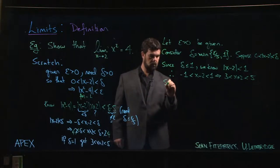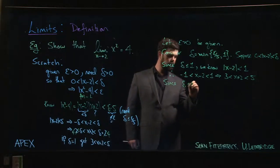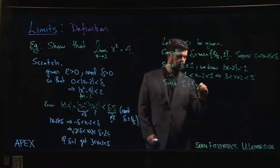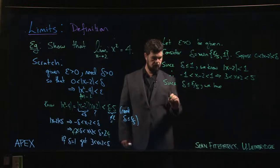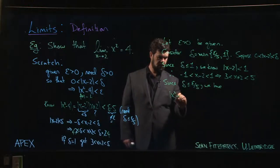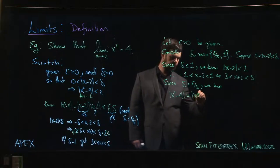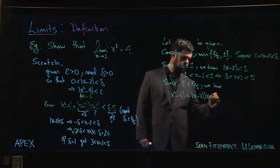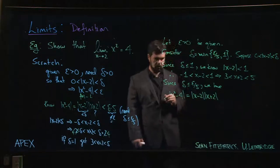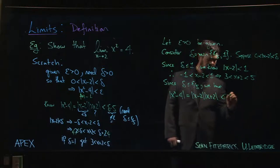Now, since delta is also less than or equal to epsilon over 5, we have that the absolute value of x² - 4, which is equal to the absolute value of (x - 2) times absolute value of (x + 2) is less than, so x - 2 is less than delta.